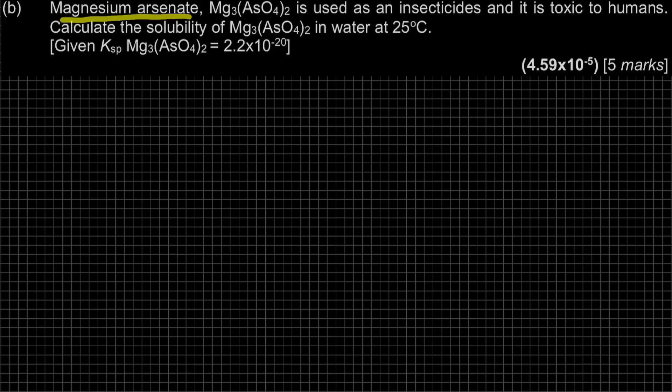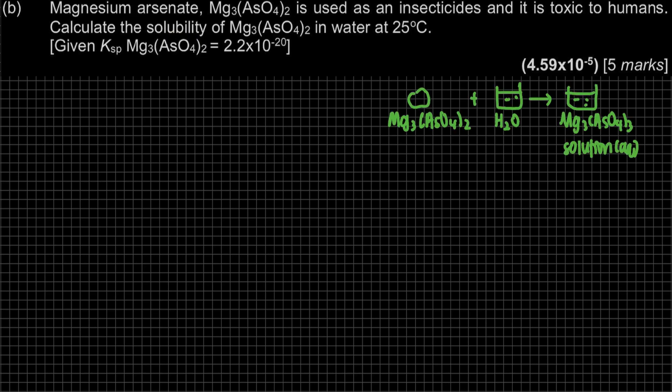Question B: Magnesium arsenate, Mg3(AsO4)2, is used as an insecticide and it is toxic to humans. Calculate the solubility of magnesium arsenate in water at 25 degrees Celsius, given that the Ksp is 2.2 × 10^-20. For the magnesium arsenate, it's a solid and we will dissolve it in water, and then we have to calculate the solubility, ketelarutan dia.